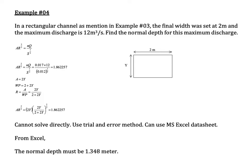Example four uses trial and error for a rectangular channel with the same dimensions as example three. The final channel width is set as 2 meters, and the maximum discharge is 12 cubic meters per second. The question asks: find the normal depth for this maximum discharge — that is, what is the maximum value of y we should set for this design?